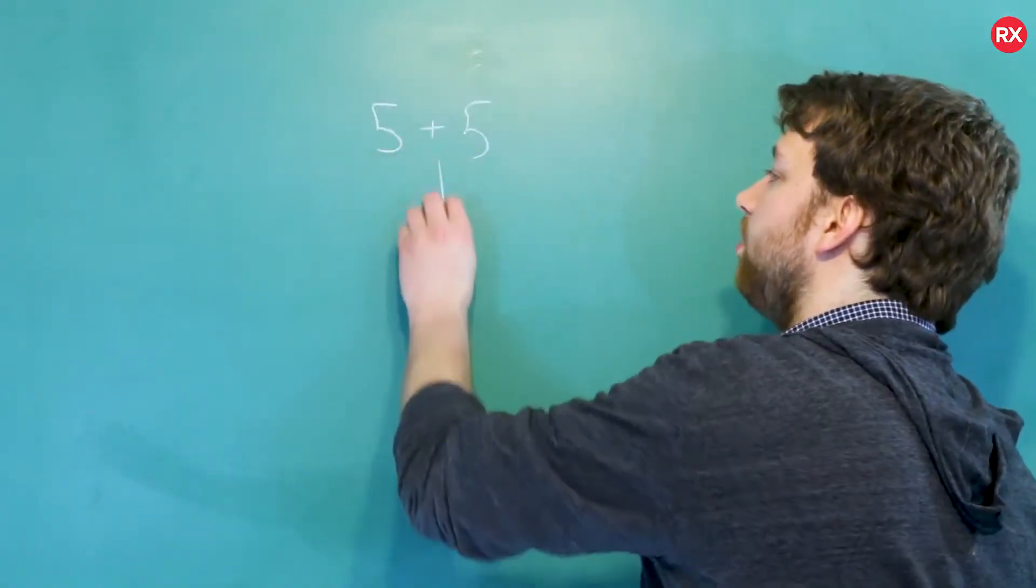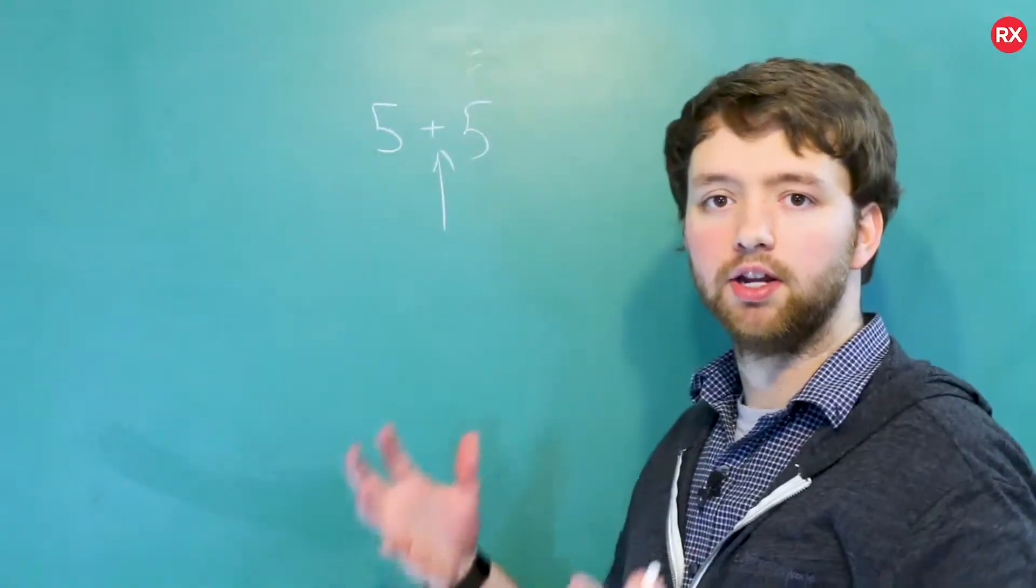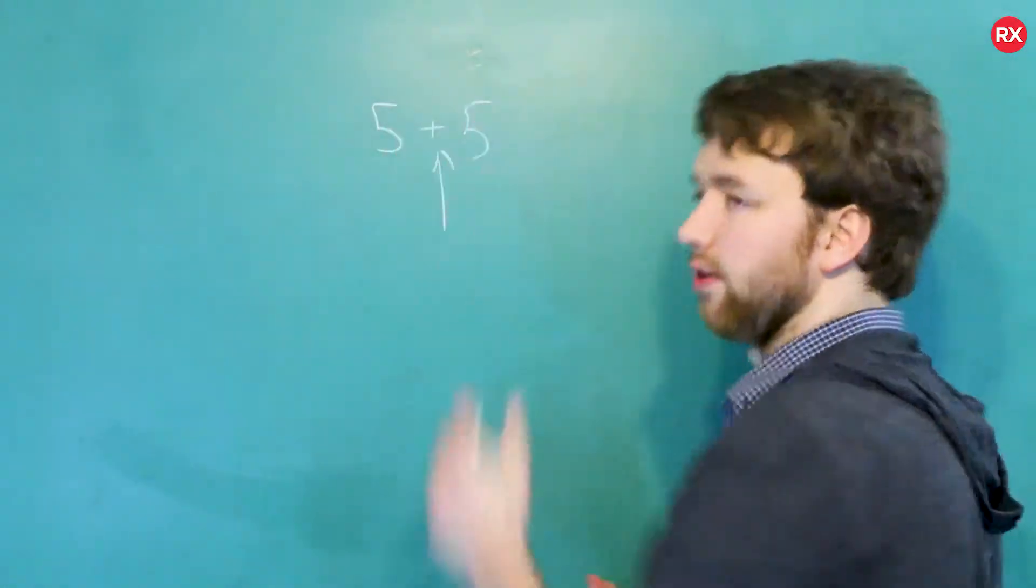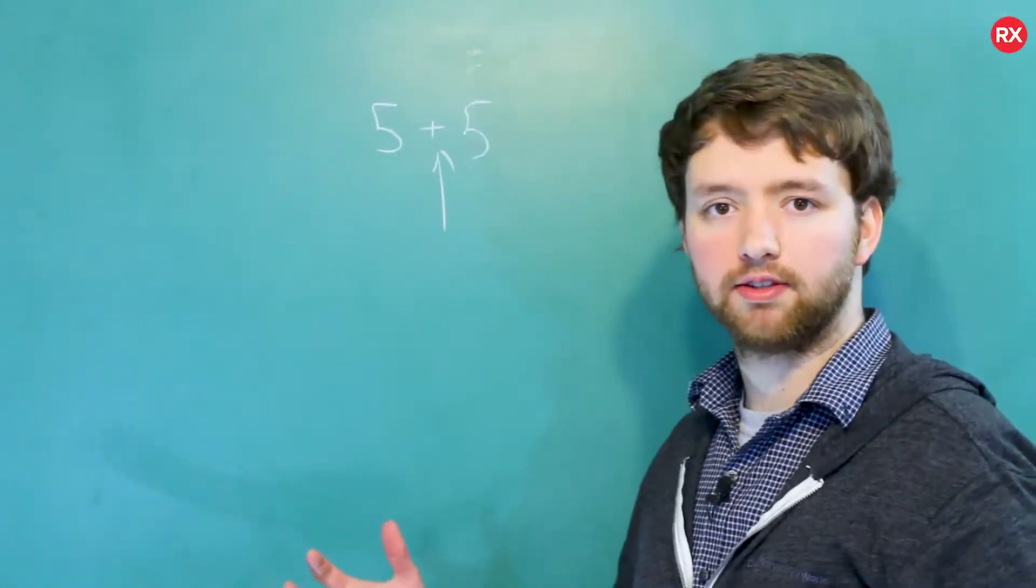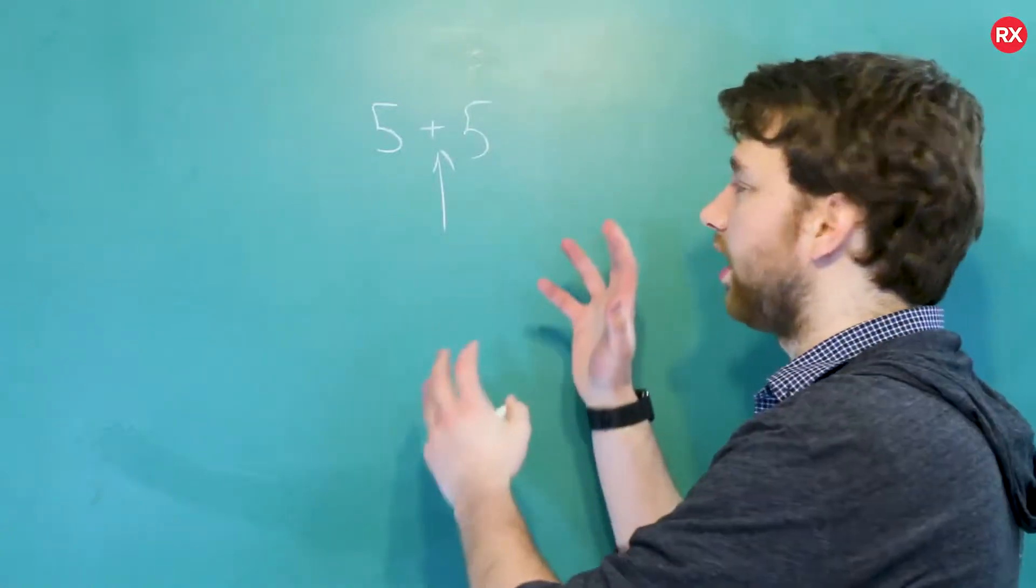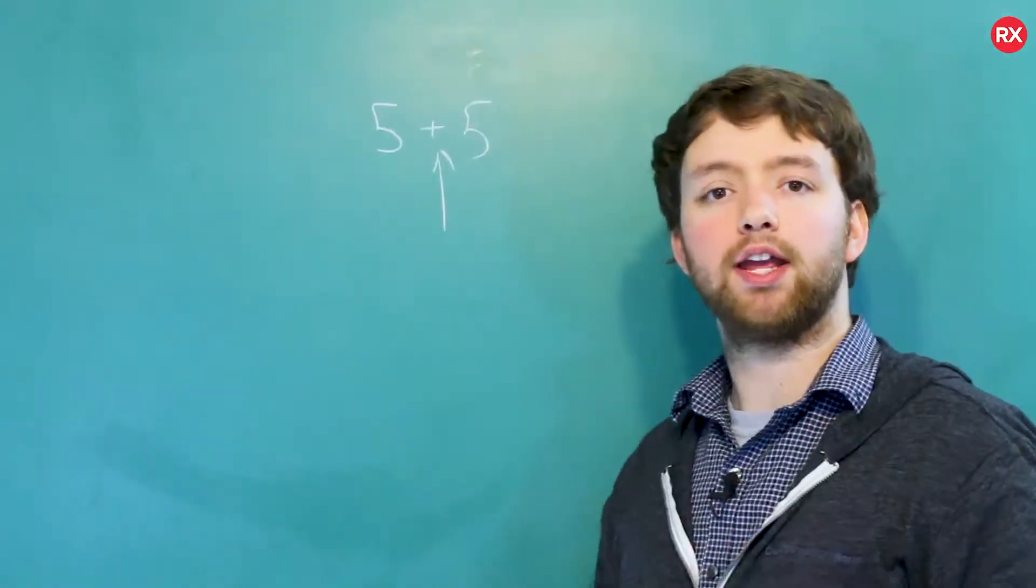So what is operator overloading? Well, if you think of an operator, let's just do a quick 5 second refresher. 5 plus 5. That plus is an example of an operator, and it does stuff with operands. The 5s are examples of operands. Now this makes sense in the context of integers, but what if we had a custom type?